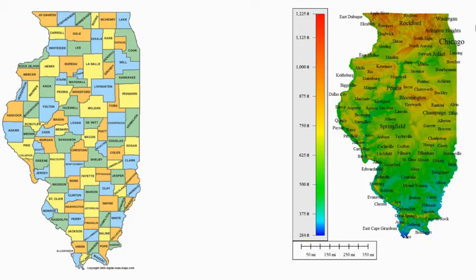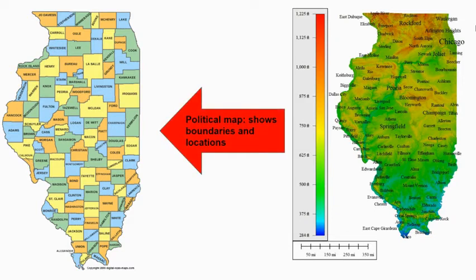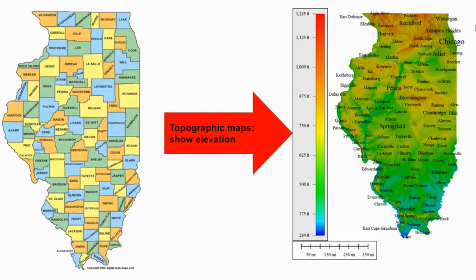Two types of reference maps to know are political maps and topographic maps. Political maps identify locations and show boundaries between places. The example here is a political map that shows the boundaries and names of all of the counties in Illinois. Topographic maps show changes in elevation — all the hills and valleys in an area. Many reference maps are a combination of political information and topographic or physical information, used by everyone from hikers choosing a route to engineers determining where to build highways and dams.